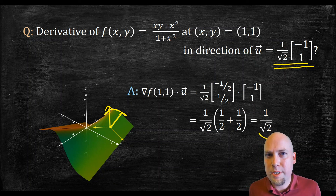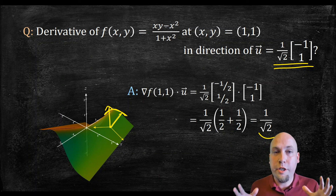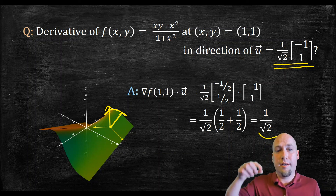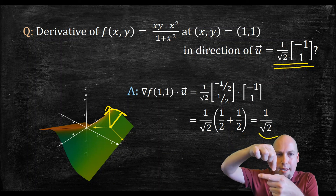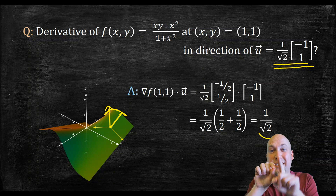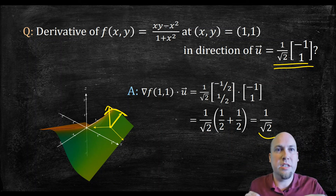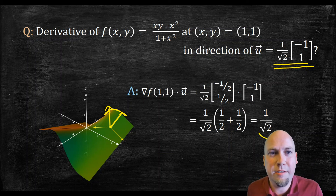That's it for directional derivatives and the gradient. Next class we'll use these tools to answer: if I'm at a particular point, what is the steepest direction I can walk in? In other words, how can I get to the top of the nearest hill as quickly as possible, or the bottom of the nearest valley?